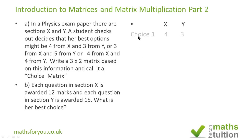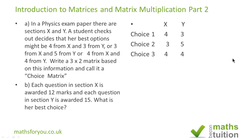The matrix would be a 3 by 2 matrix. You have got choice 1: 4 from X and 3 from Y. Choice 2: 3 from X and 5 from Y. And choice 3: 4 from X and 4 from Y.